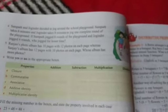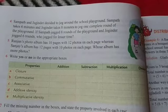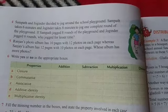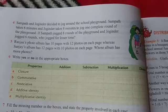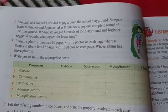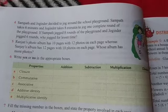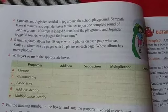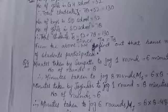Now question number four is: Sampat and Joginder decided to jog around the school playground. Sampat takes 6 minutes and Joginder takes 8 minutes to jog one complete round. If Sampat jogged 8 rounds and Joginder 6, who jogged less or who jogged more?